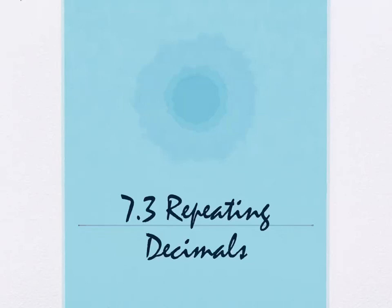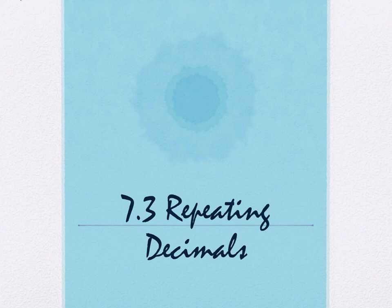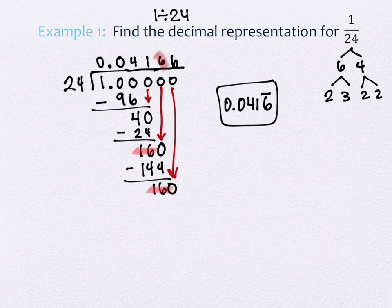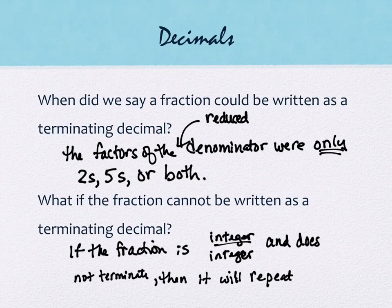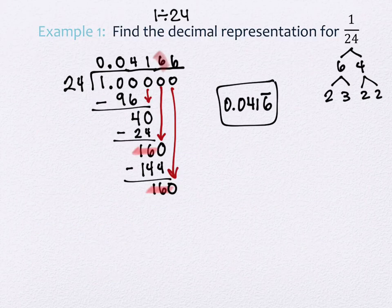All right, 7.3 repeating decimals. We started this section last time and had taken a look at taking fractions and seeing places and times when they turn into numbers that are repeating. We had established that we get repeating decimals when we have denominators that don't just have twos and fives in them.